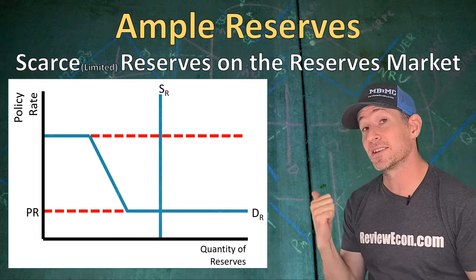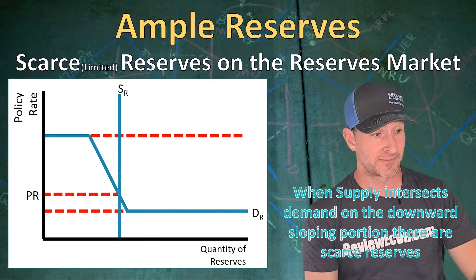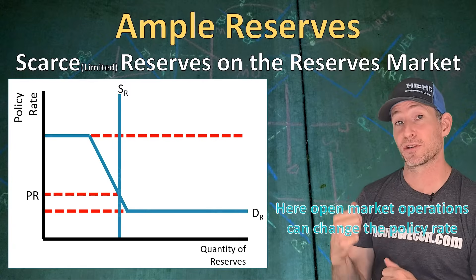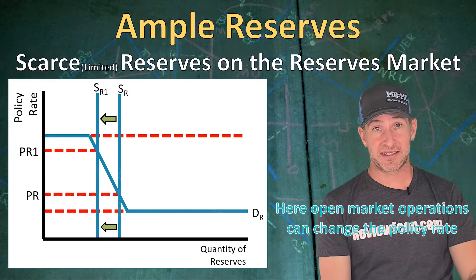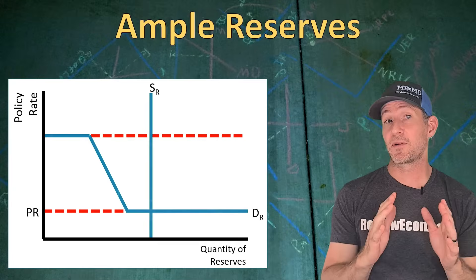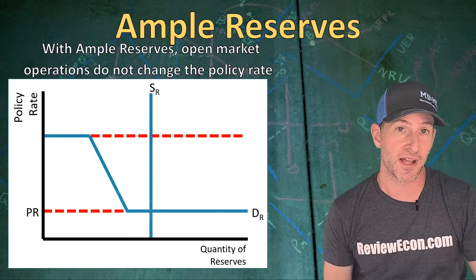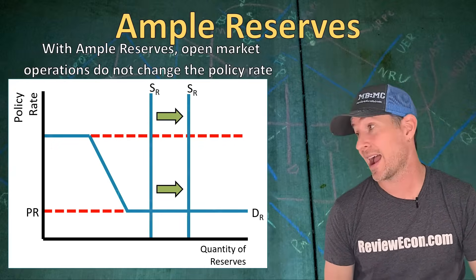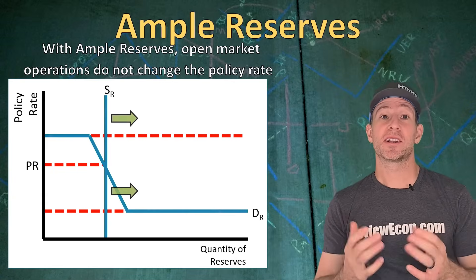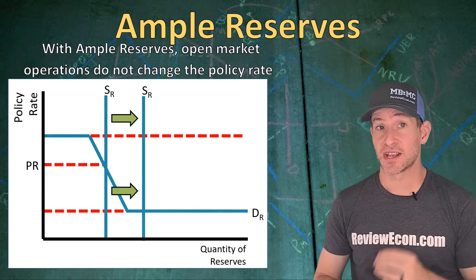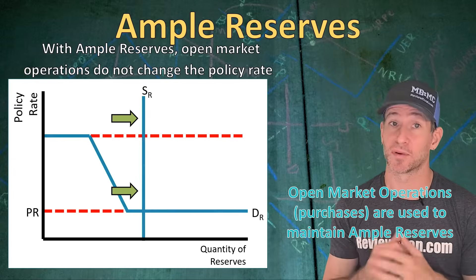The old scarce reserve model is visible on the downward sloping portion of the demand curve. When supply intersects the demand curve at that downward sloping portion, small changes in the supply of reserves impact the policy rate — so open market operations affect the interest rate there. But in an ample reserve system, where the supply curve intersects the demand curve at the lower bound, changes in the supply of reserves have no impact on the policy rate. Open market operations instead maintain ample reserves by keeping the intersection along the lower bound.